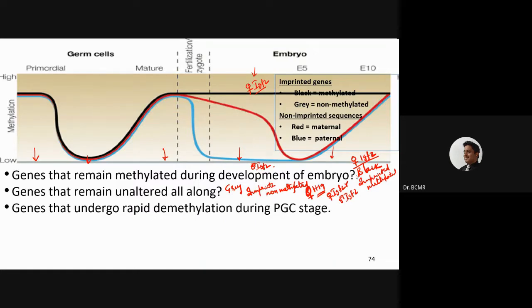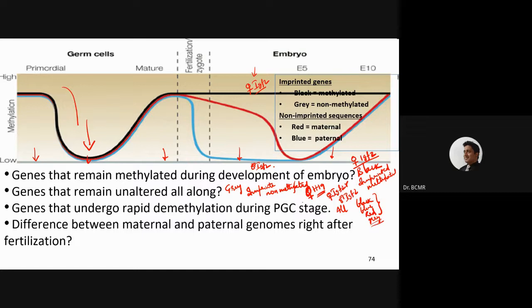Genes that undergo rapid demethylation during the primordial germ cell stage — around this stage what you're seeing is all of them: the black ones that were having methylation, the blue and the red representing all the genes. Gray is already demethylated, so no worries there. Everything is getting demethylated around this stage. What is the difference between maternal and paternal genomes right after fertilization? One is going through rapid demethylation, whereas the other one is getting demethylated much more gradually.